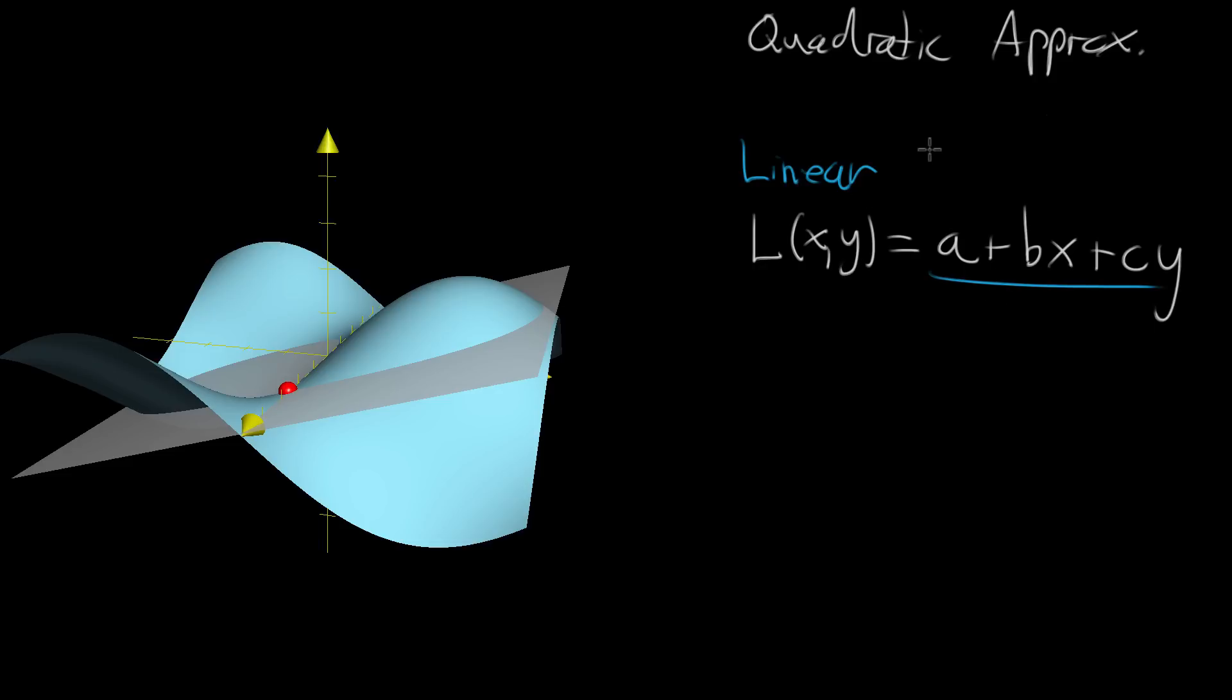And technically this isn't linear. If one was going to be really pedantic, they would say that that's actually affine, because strictly speaking, linear functions shouldn't have this constant term. It should be purely x's and y's. But in the context of approximations, people usually would call this the linear term.